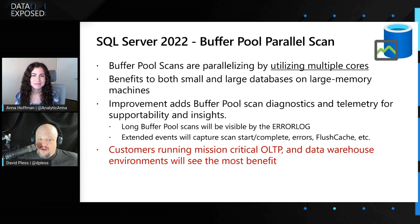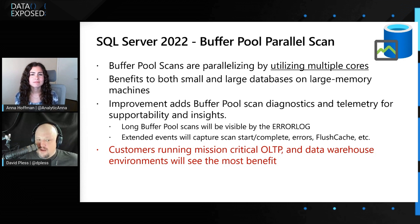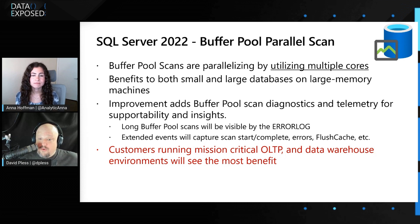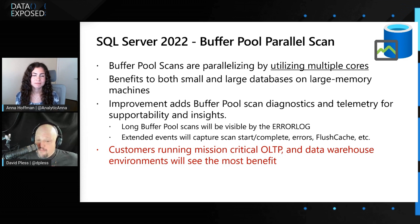This parallel scan feature also improves the Buffer Pool scan performance of smaller databases residing on larger machines. The improvement is adding processing power to scan the Buffer Pool more efficiently, so smaller operations on large machines will also benefit. This is a general benefit — just by upgrading to SQL Server 2022 you're going to see this benefit because it's on by default. We've also backported some of the Buffer Pool scan telemetry for supportability.